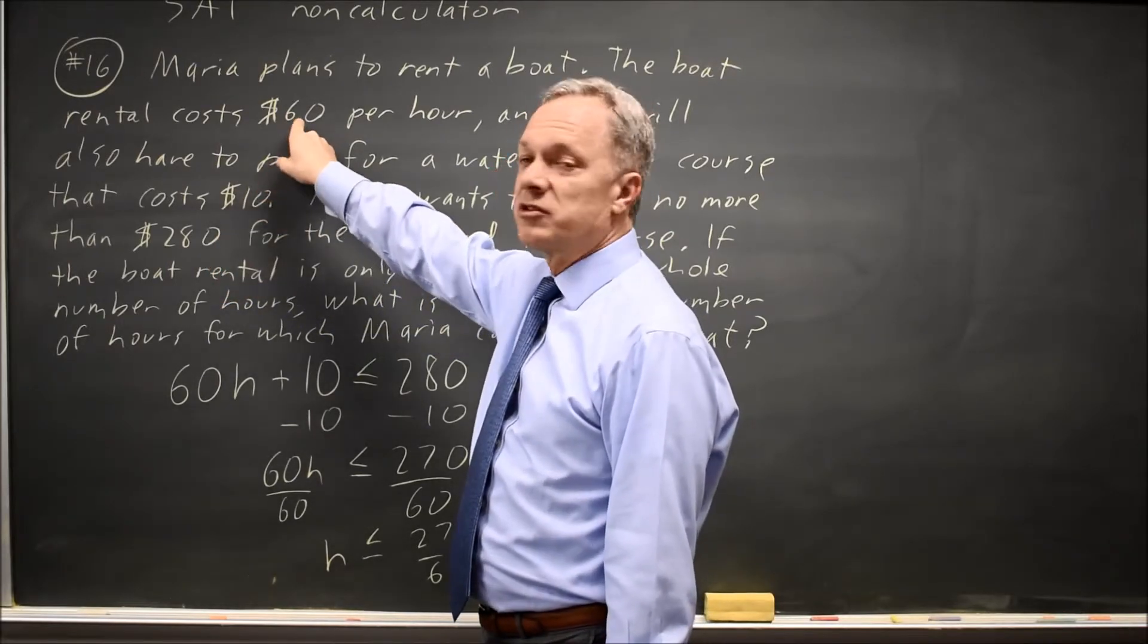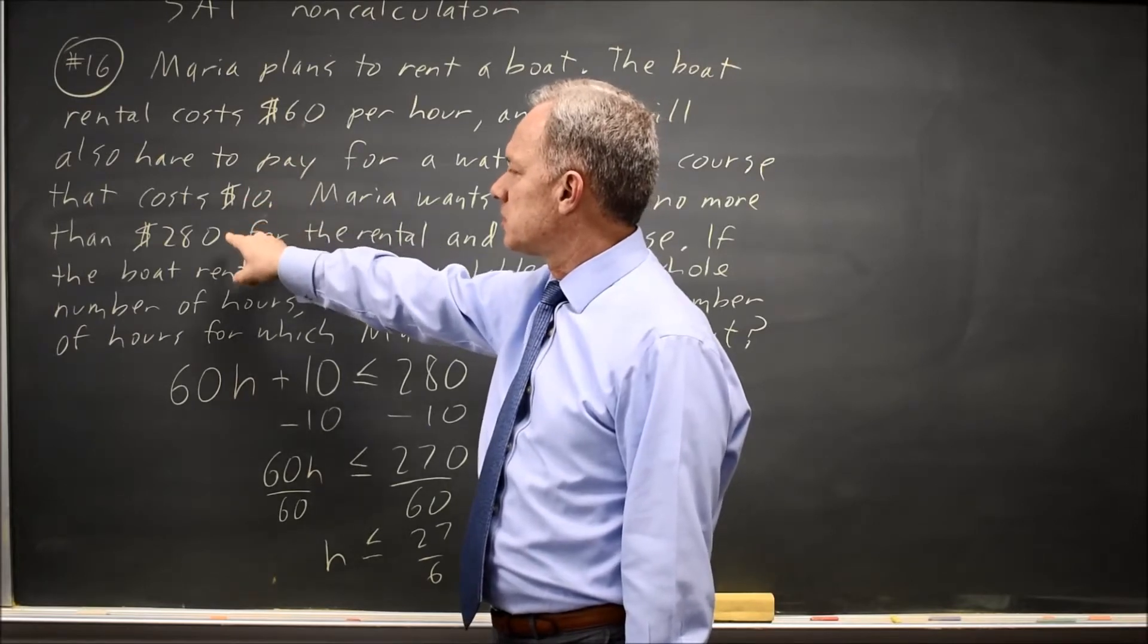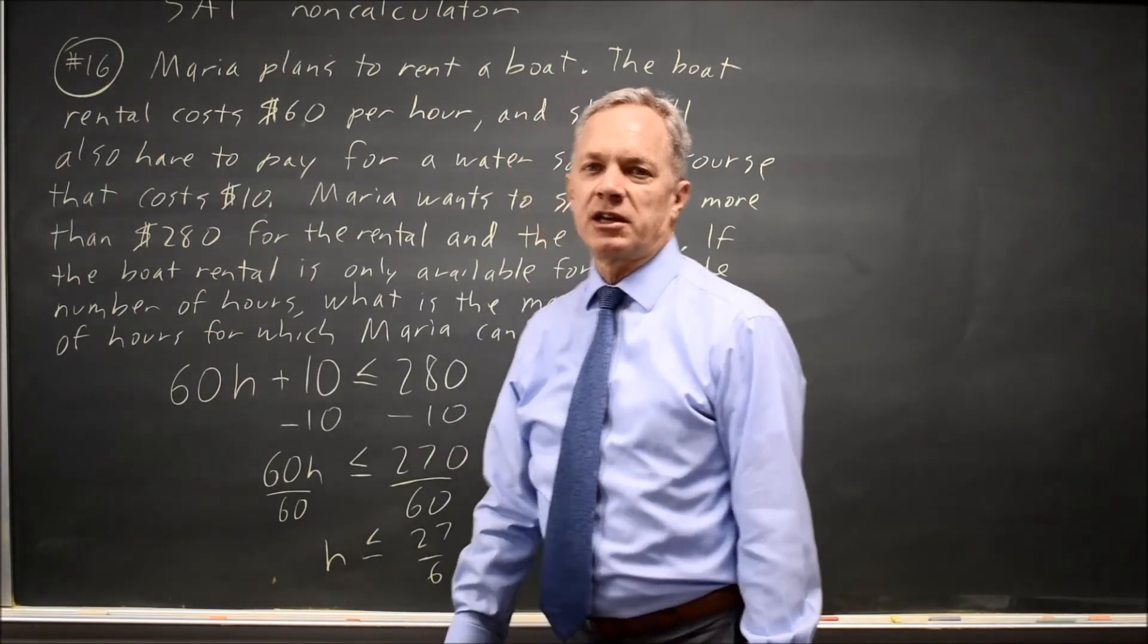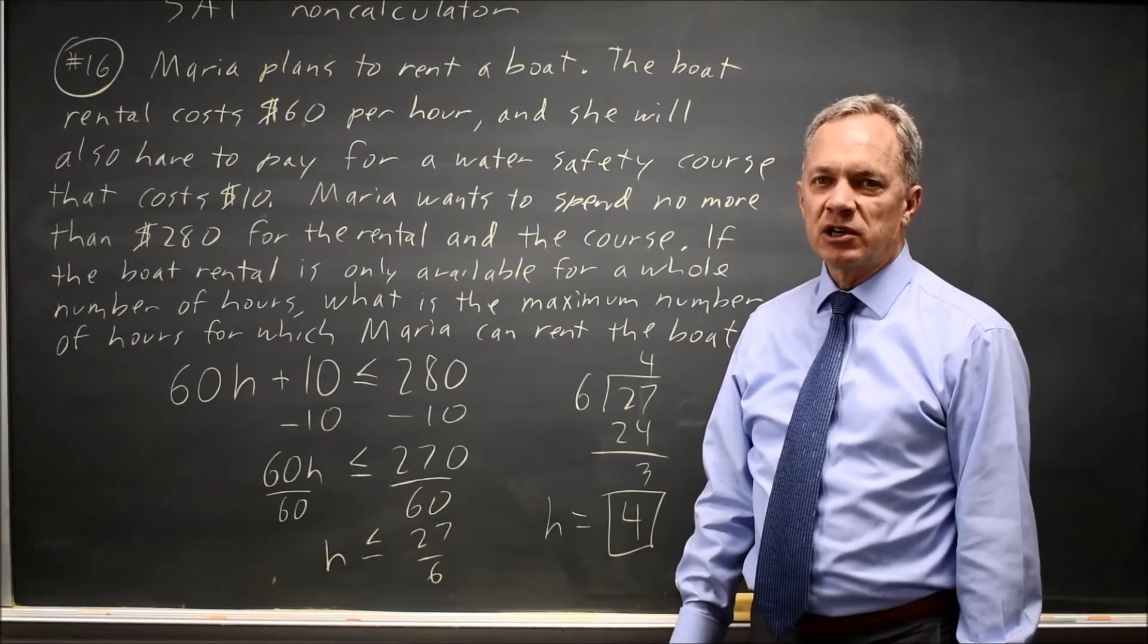At H equals 5, the rental is 5 times 60 is 300, plus the $10 water safety course is 310, and that's too much. You can't go for 5 hours, so 4 is the largest number that works if you try guess and check.